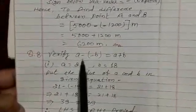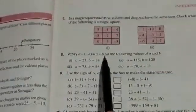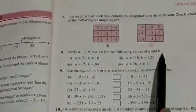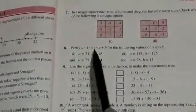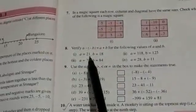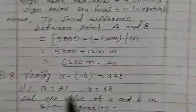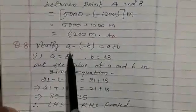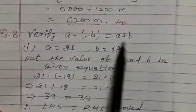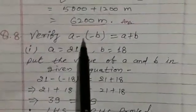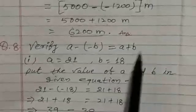Question number 8. Here verify, here A minus B, A minus, in small bracket, minus B, equal to A plus B. For the following value of A and B, verify it. A minus B equal to A plus B, you write the value of A here.